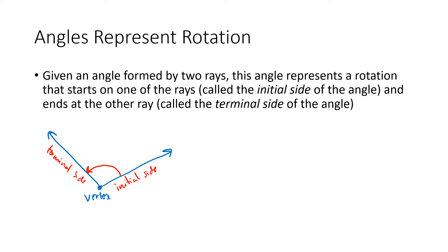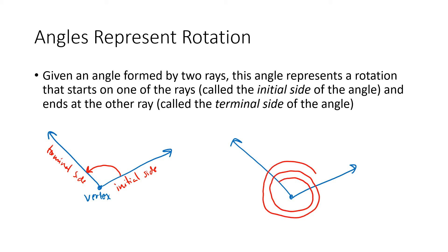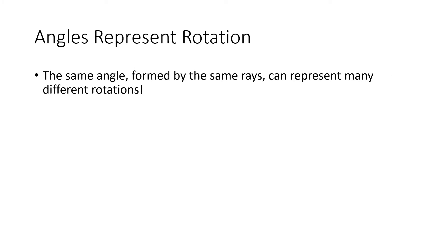It's important to note that those same two rays can represent a different rotation. For example, I could represent the rotation that starts over here and actually spins around a couple times before ending — it's the same two rays but a very different rotation, with a different initial side and terminal side. The main thing to keep in mind is that just because you have two rays doesn't mean you necessarily know what rotation those two rays represent. The same angle formed by the same rays can represent many different rotations.